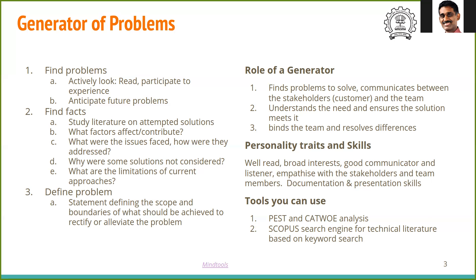Some tools the Generator can use are PEST and CAT — you can do a Google search to find out what they mean. For technical literature, to find what has been done on a problem, a good scientific search engine is Scopus. IIT Bombay has a subscription to Scopus.